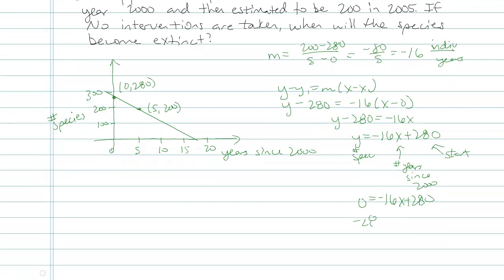Subtract 280 from both sides. Divide both sides by 16, and I end up getting 17.5. That means the year 2017 is when I can expect my population to be extinct, and that's pretty close to what I got when I graphed.